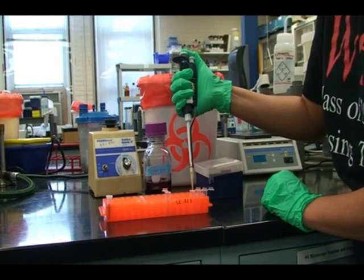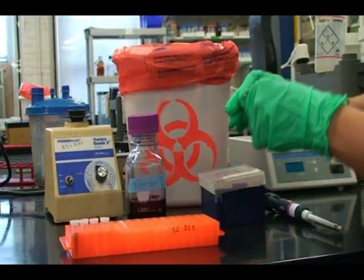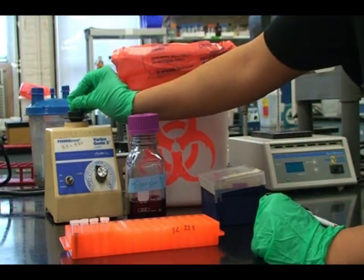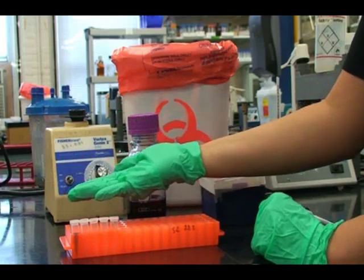Repeat this process of pipetting 100 microliters from the previous dilution to the new dilution until the end concentration is met. Remember to throw out the pipette tip after each dilution, close the 1.5 milliliter tube and vortex before starting the next dilution.